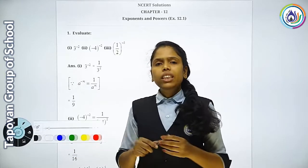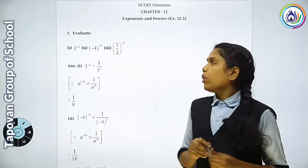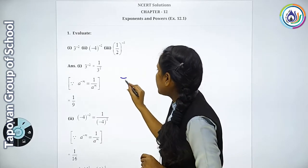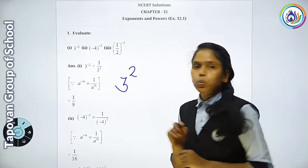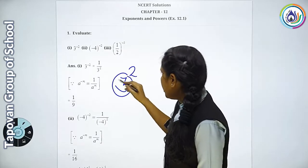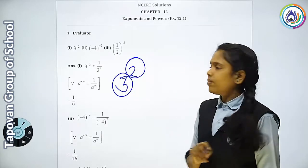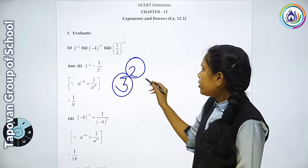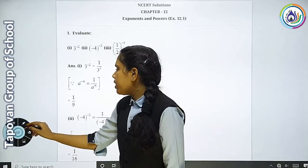So first, let's think about what is an exponent and what is a power. Exponent kishe kehate, power kishe kehate. Yeh minhae likha 3 upar 2. So yeh humara base hai, yeh humara exponent hai aur yeh humara power. Now 3 ki power kitni hai? So 2 hai. So is tarah se aap ko sum karna hai.